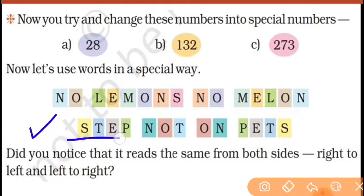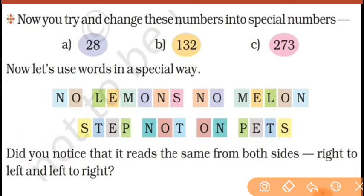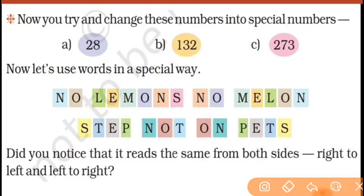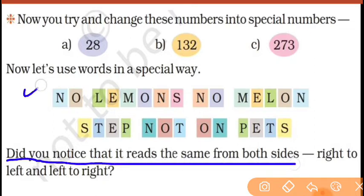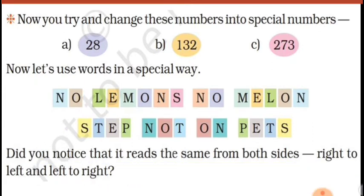You can read the second one also: 'step not on pets'. Isko ulta kaise padhenge? 'Step not on pets' — same! Kitna mazedaar hai yeh. Yes, so you can see some sentences also are palindromes. Did you notice that? It reads the same from both sides — right to left and left to right, both are equal, same.